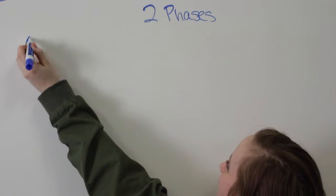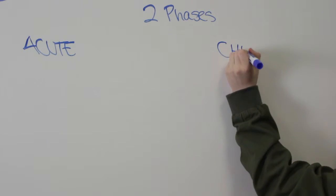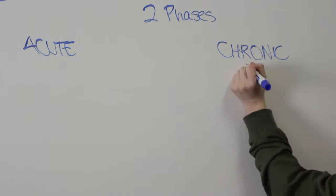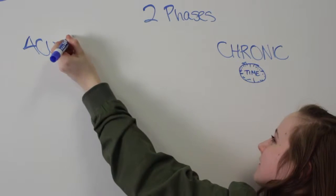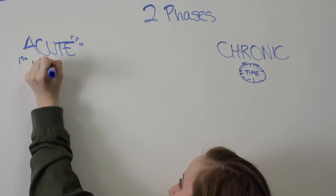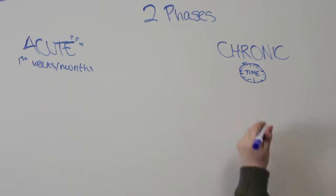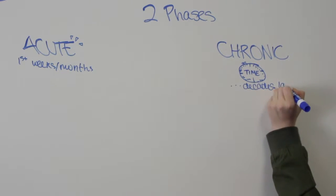Chagas disease has two distinct phases: acute and chronic. The acute phase appears in the first weeks to months of the infection, and the chronic phase can occur anywhere from a few years to decades later. Both phases can range from being asymptomatic to life-threatening, but the severity depends greatly on the patient and the strain of the parasite.